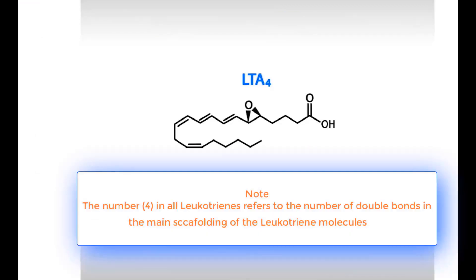Note that the number 4 in all leukotrienes refers to the number of double bonds in the main scaffolding of leukotriene molecules.